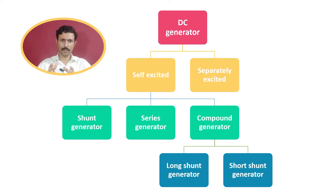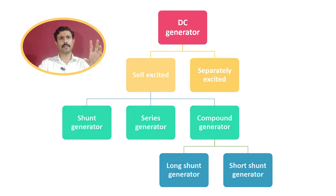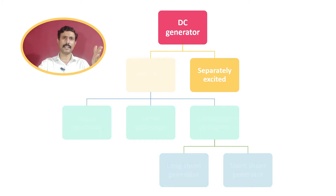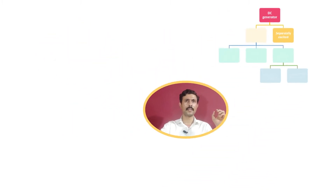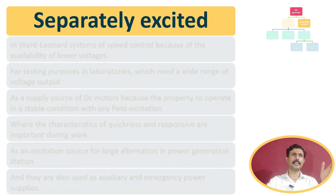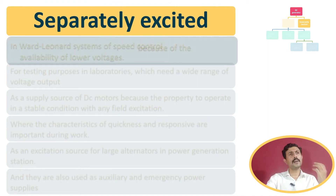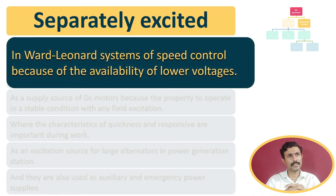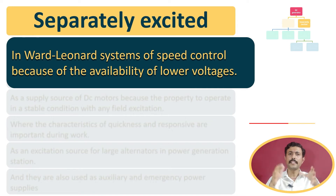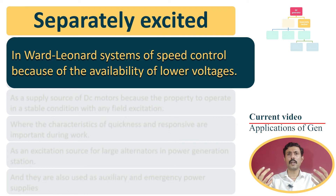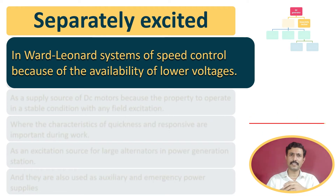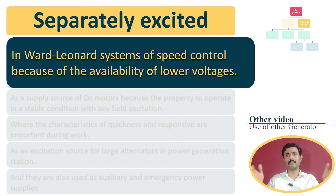Now we'll quickly jump to the applications. We are going to learn the applications of separately excited DC machine. This machine has a variety of applications. The first application of separately excited DC generator is in the Ward Leonard System. It is used there because it can produce output voltage in a very wide range.